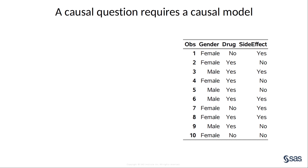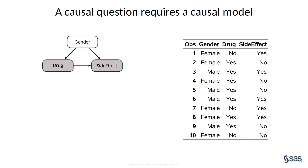When you use this data set to estimate the causal effect of the drug on the side effect, you must decide whether to stratify the analysis by the third covariate, gender. A rule of thumb is that all pretreatment covariates should be adjusted for in an analysis. Thus, because gender is a pretreatment covariate, the analysis should be stratified by gender. While this logic is not wrong, it is incomplete. The decision to adjust for a covariate should depend upon the assumed causal structures that produce the data.